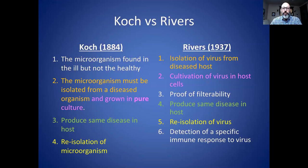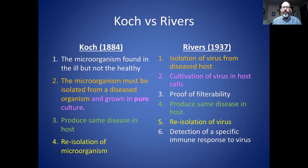Criterion four: you must take that isolated particle and put it into a healthy host and cause the same disease — the same as the third criterion of Koch's postulates. This is the most important criterion for proving that an agent causes a disease. Before this step, even if you find it in people with the disease, it's just an association or correlation, and that does not prove causation. For example, if you show up at a fire and see firefighters there, you can't assume the firefighters caused the fire — they're actually putting it out. You can be really confused without this step.